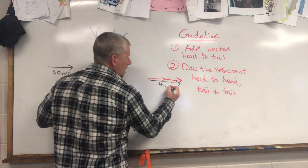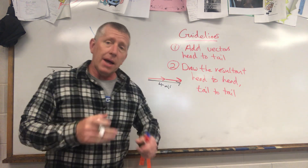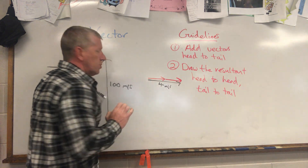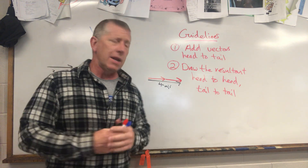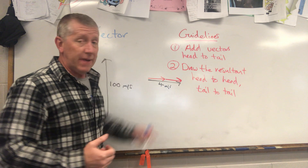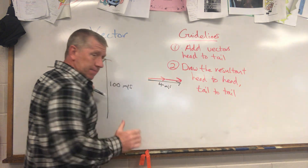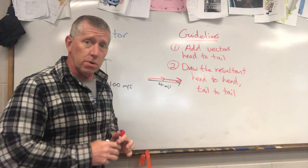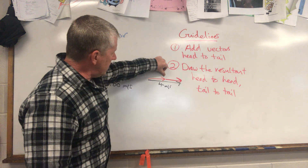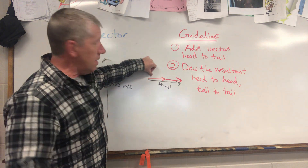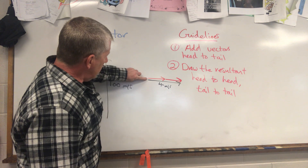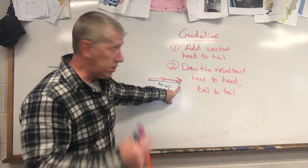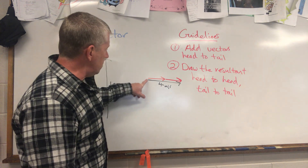We knew the result was four meters per second because when they're back to back like that, we simply add the numbers. For a straight-line answer with two straight vectors, I like to draw it offset — maybe pulled off to the bottom or top — so I can see the two arrows that made the answer. Add the vectors head to tail; draw the resultant head-to-head, tail-to-tail.